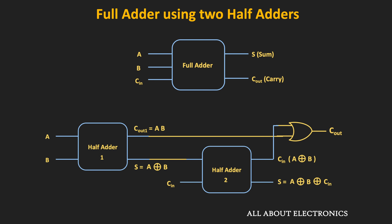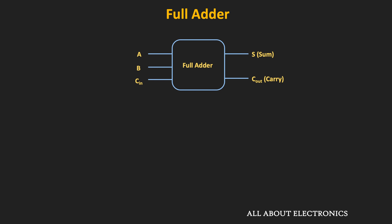This full adder circuit can add two one-bit numbers along with the carry bit, and it gives the sum and the carry bit as the output. But if we want to add two four-bit numbers, for example, then we require four such full adders.